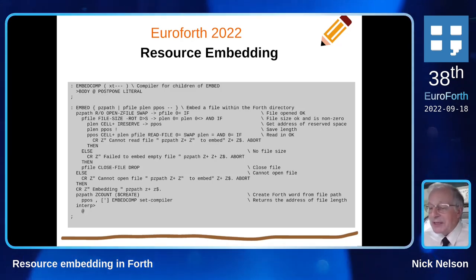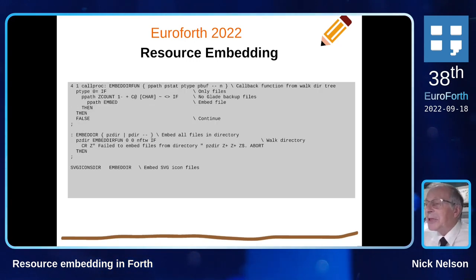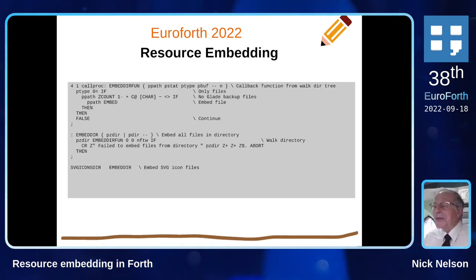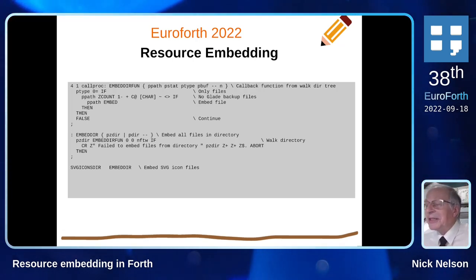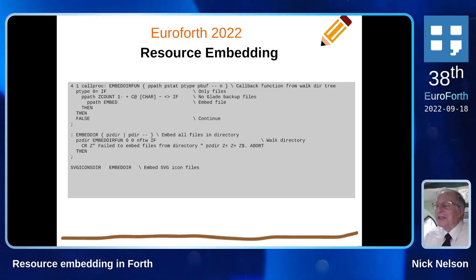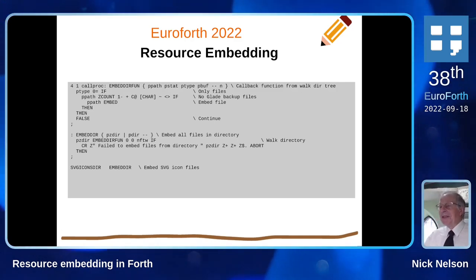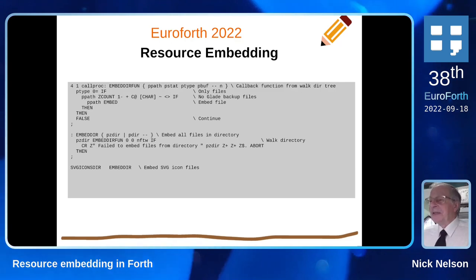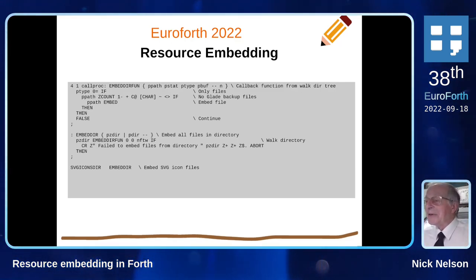Once you've got that word, lo and behold you can embed entire directories. The SVG icons directory in one of our applications has got 30 or 40 files in there, and that sticks them all within the Forth code in one little instruction — embed-directory — as you can see.